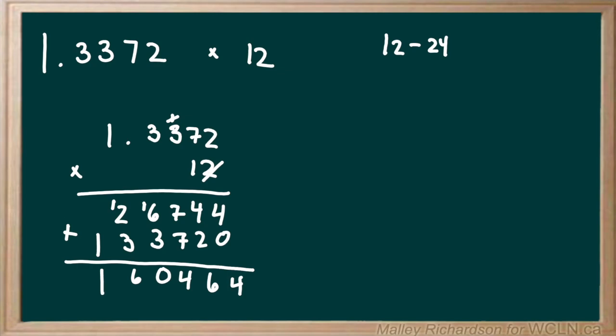So now we have to deal with our decimal. In our original answer we have 4 digits behind our decimal. So that means in our final answer we're going to have 4 digits behind our decimal. So 1, 2, 3, 4. That means our decimal is going to be right after our 16. So our final answer is 16.0464.